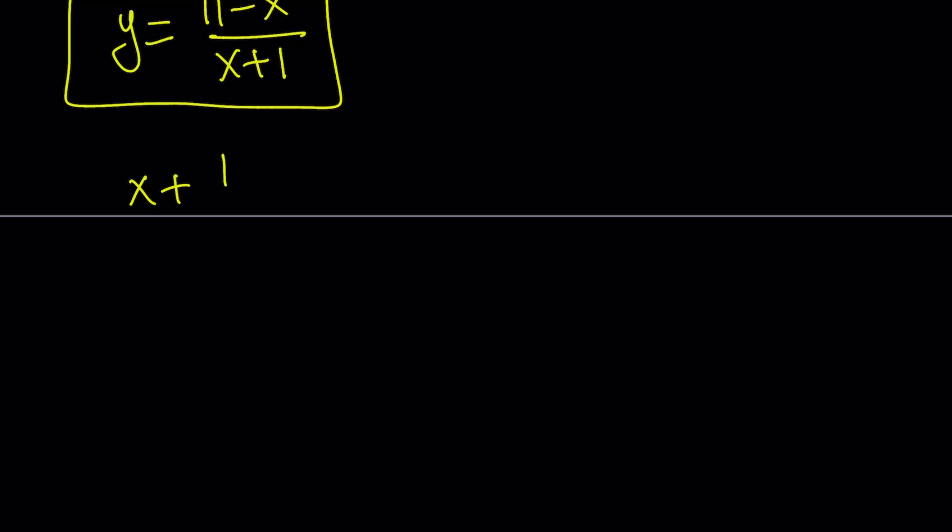x plus y, which is (11-x)/(x+1). That is multiplied by xy+1. And when you multiply y by x, you get (11x-x²)/(x+1). You only multiply the numerator. And of course this plus 1.